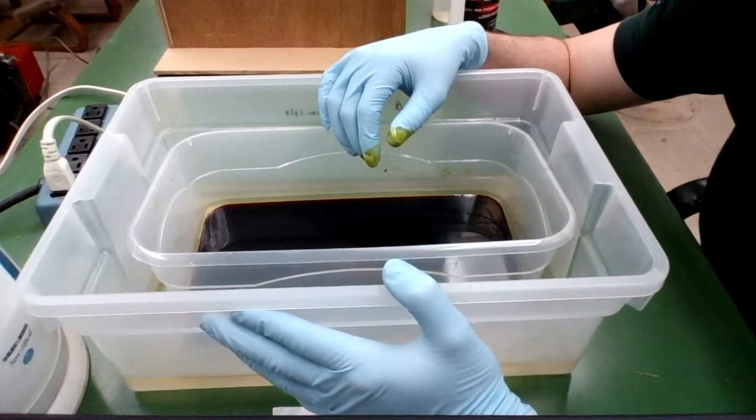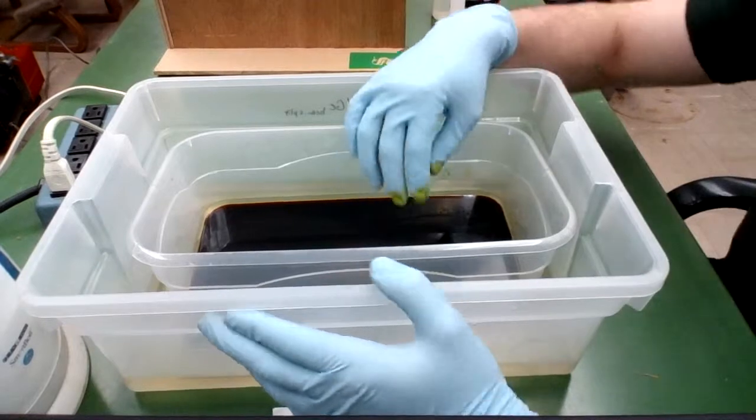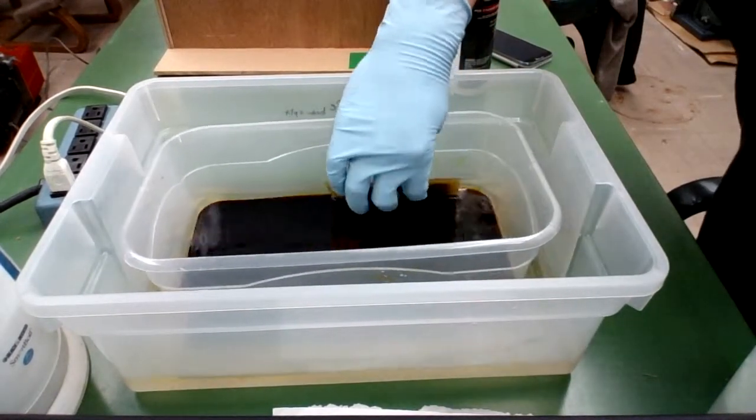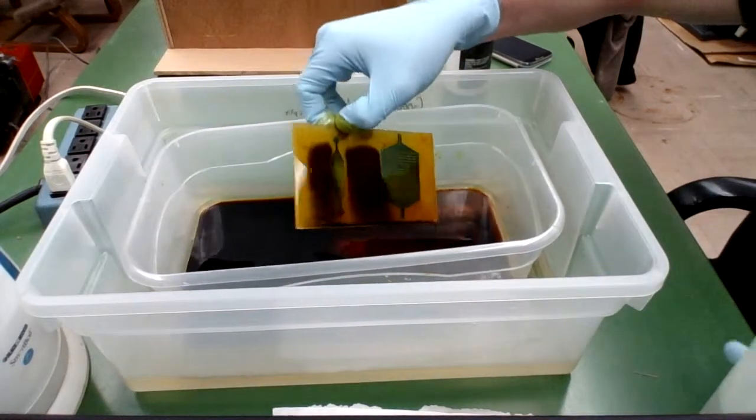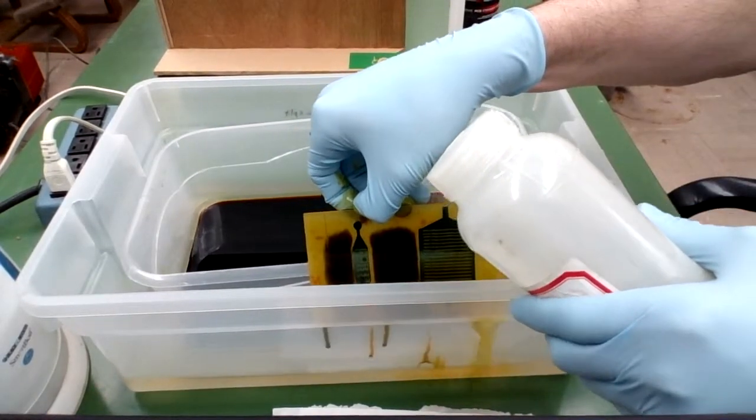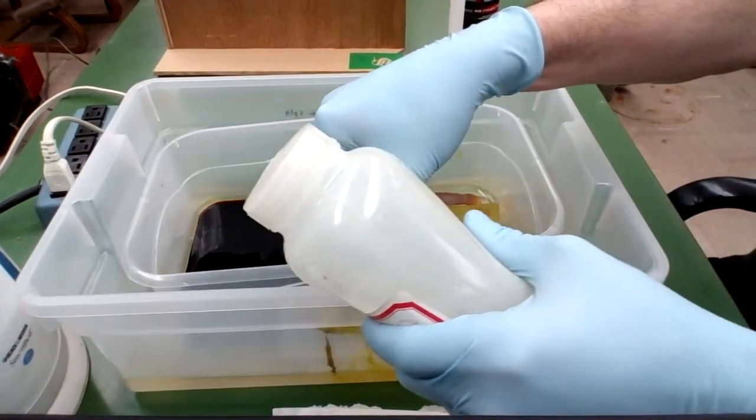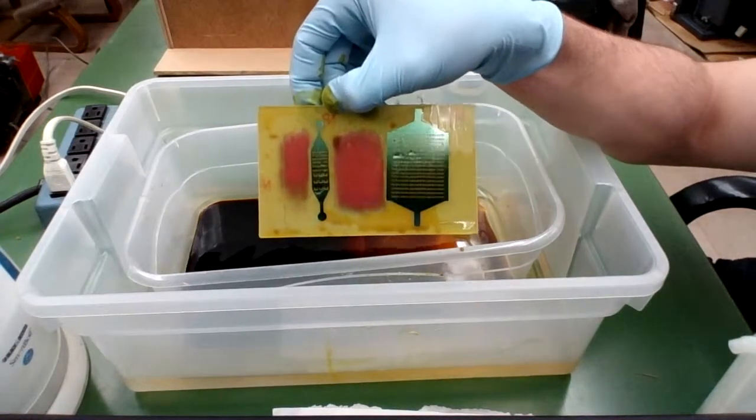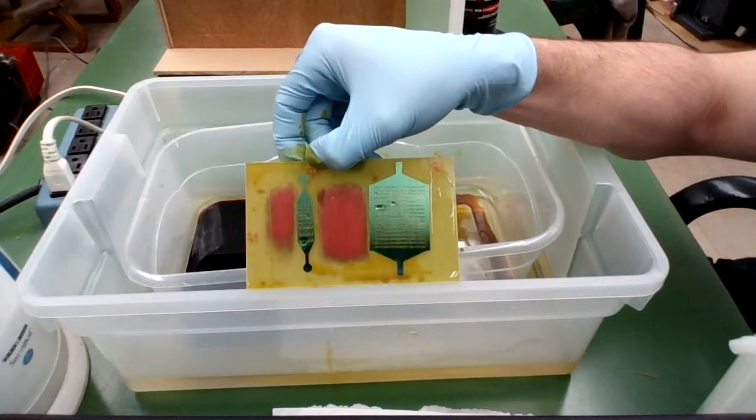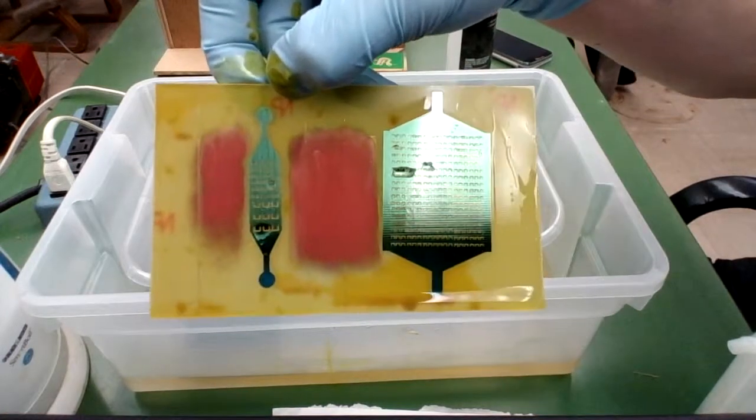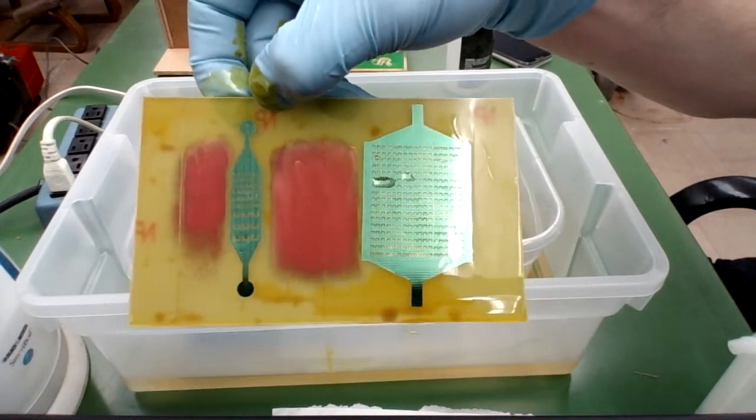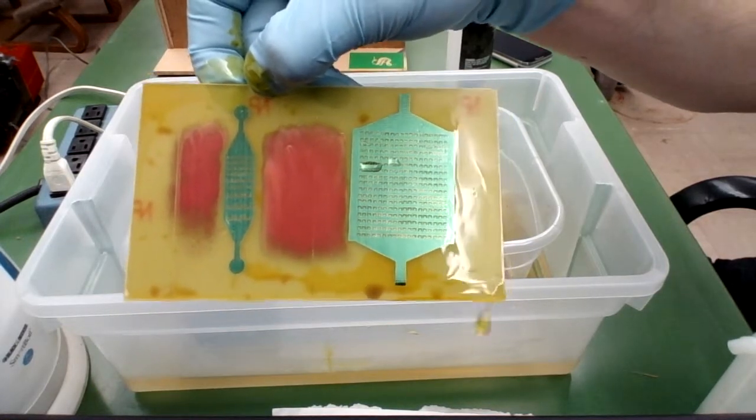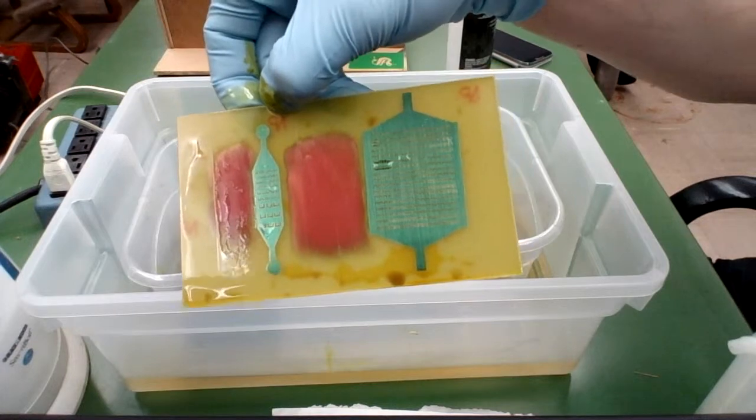All right, so it's been approximately 15 minutes and my board is almost completely etched. I'll show you its progress. Let's rinse it off here. You can see that all of my traps have been—the copper in the traps has been etched away. Most of the copper surrounding the designs has also been etched away.